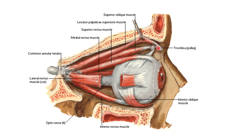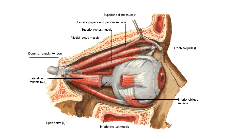Moving on to the attachments of the levator palpebrae superioris. This muscle is a triangular sheet of muscle which originates from the lesser wing of the sphenoid bone. The origin of this muscle is from the under surface of the lesser wing of the sphenoid, along with an attachment from the common tendinous ring.